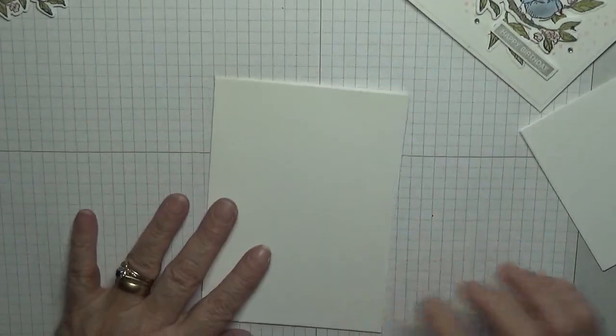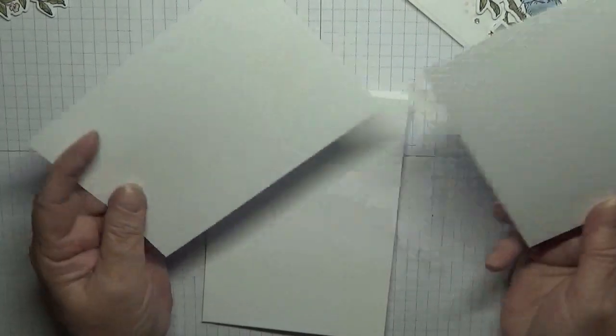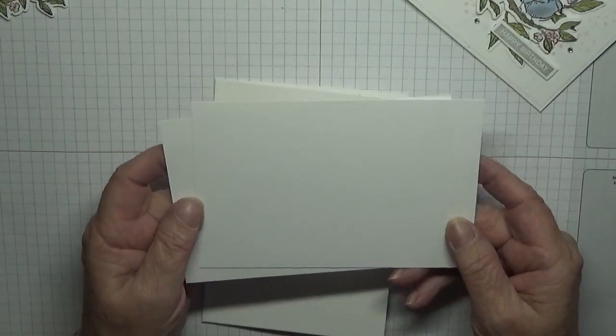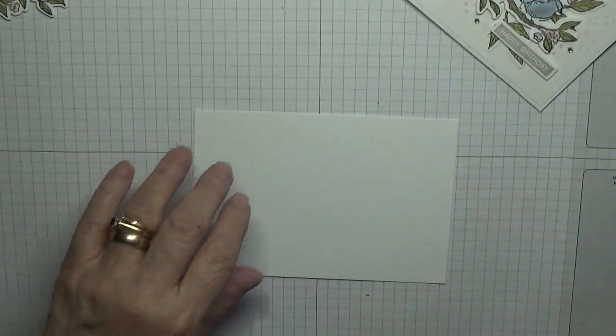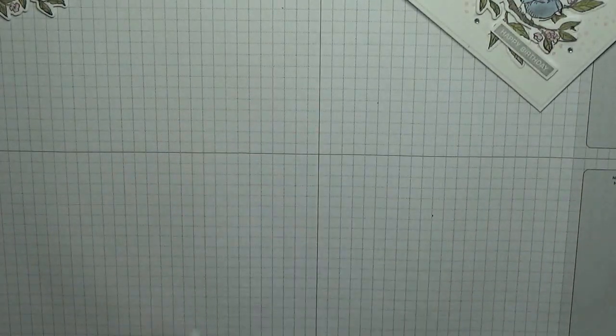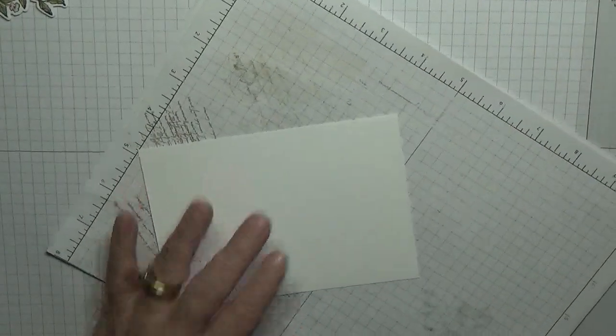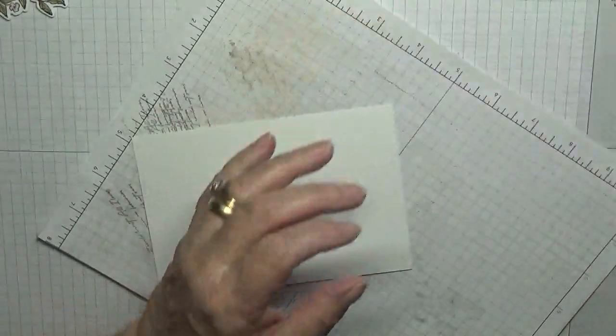So that is that. And then you want two white pieces at five and five-eighths by three and seven-eighths, one for the inside and one for the outside. All right, to get started I need this scrap of paper.